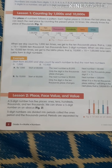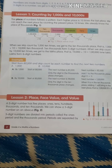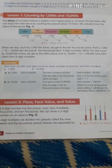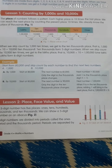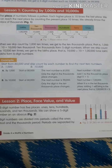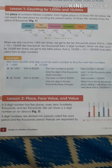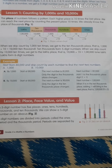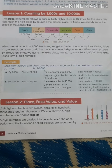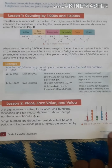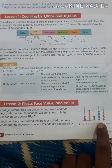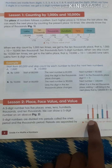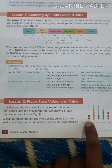Here we are talking about 5-digit numbers. Yesterday itself we saw 5-digit numbers have 5 places. We start reading from the right-hand side: ones, tens, hundreds, thousands, ten thousands.